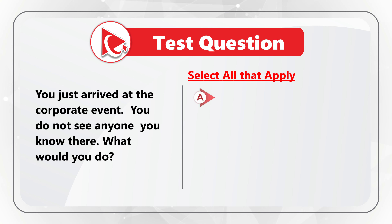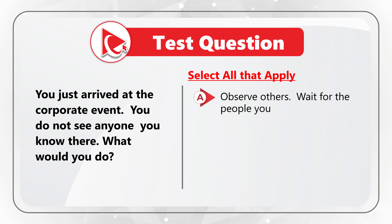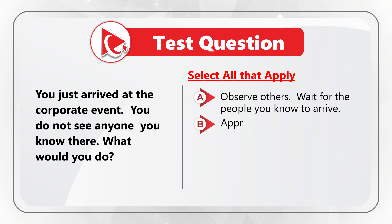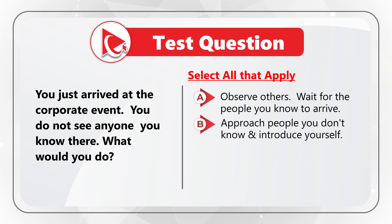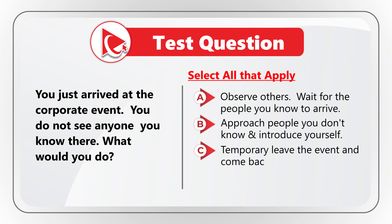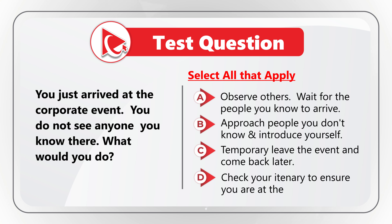You need to select all that apply out of four choices. Choice A: Observe others and wait for people you know to arrive. Choice B: Approach people you don't know and introduce yourself. Choice C: Temporarily leave the event and come back later. Choice D: Check your itinerary to ensure you are at the right place.